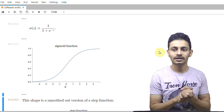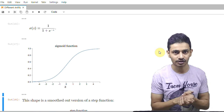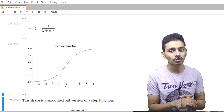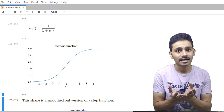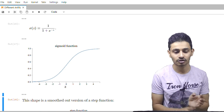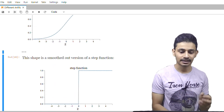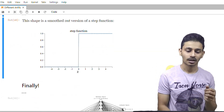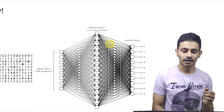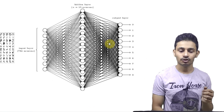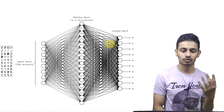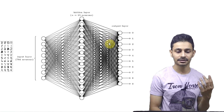We have other activation functions also, such as Tanh, ReLU, and Leaky ReLU, because there are even disadvantages of the sigmoid function. We will discuss that in the next video. Now let's see a complete neural network which can be used for our example — that is, to classify handwritten digits.